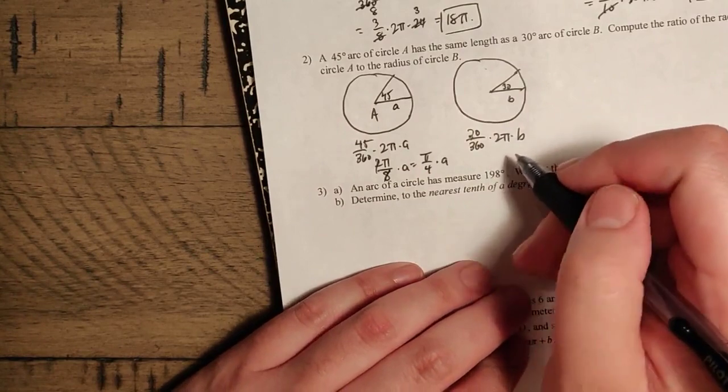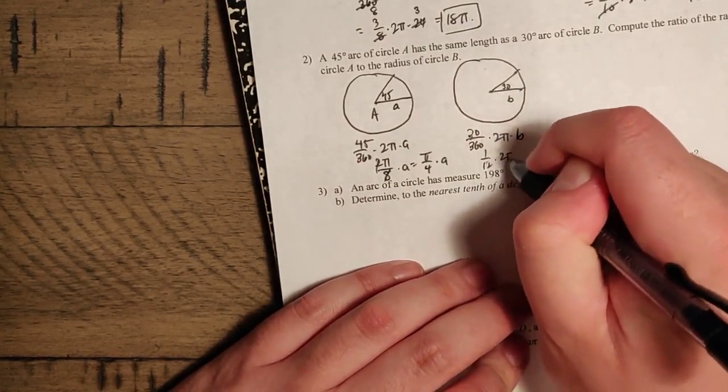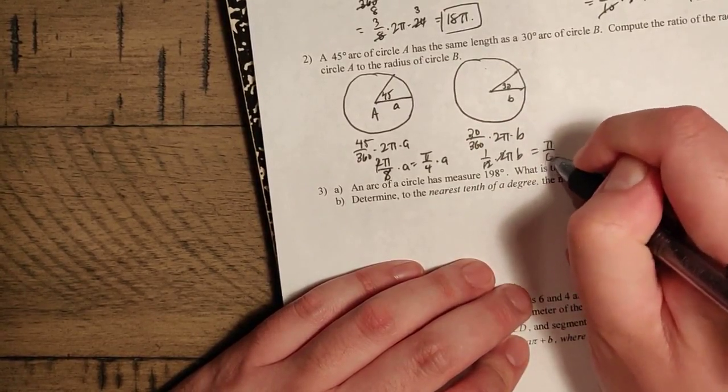Here we have 30 over 360 times 2 pi times B. 30 over 360 is a 12th. So you have a 12th times 2 pi B. This cancels out leaving us pi over 6 B.